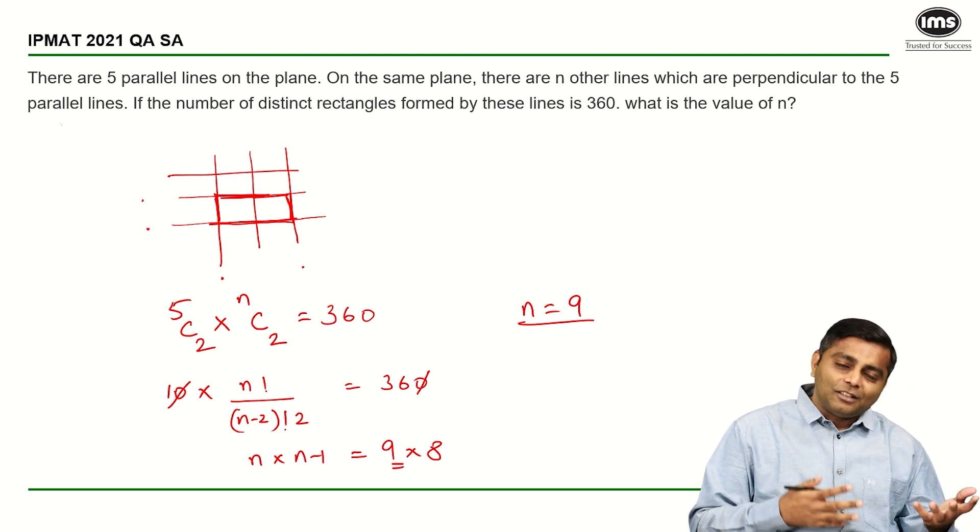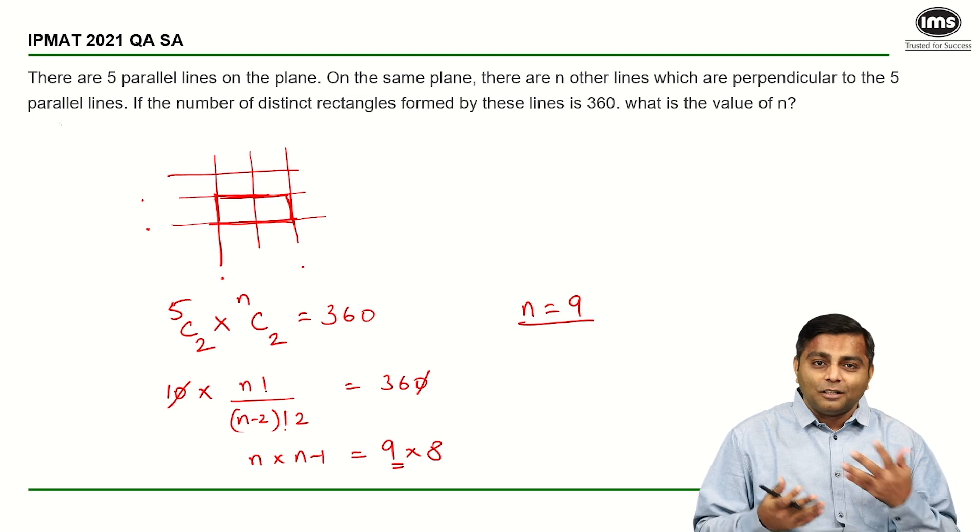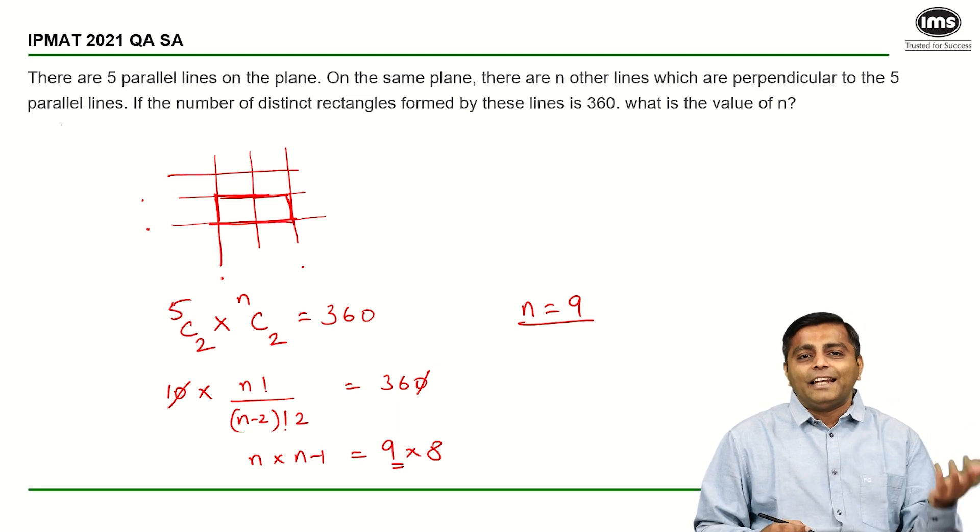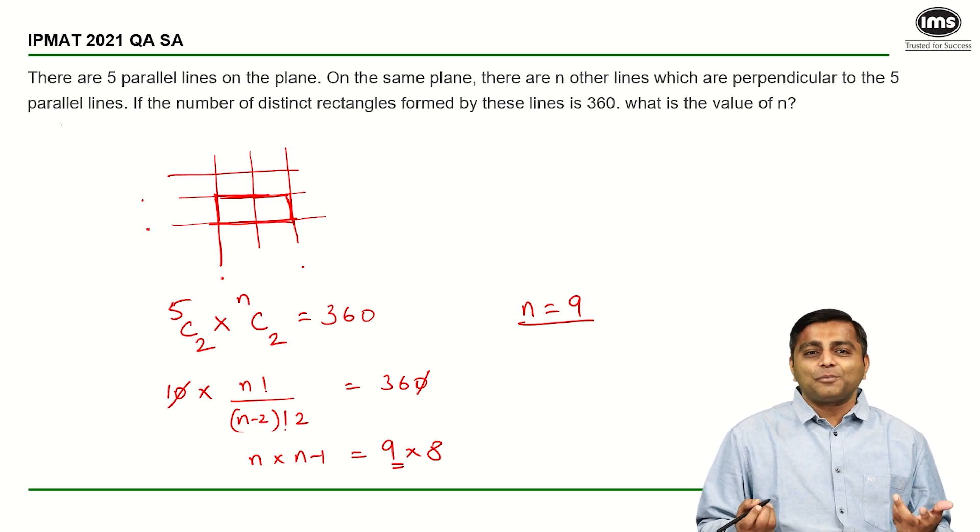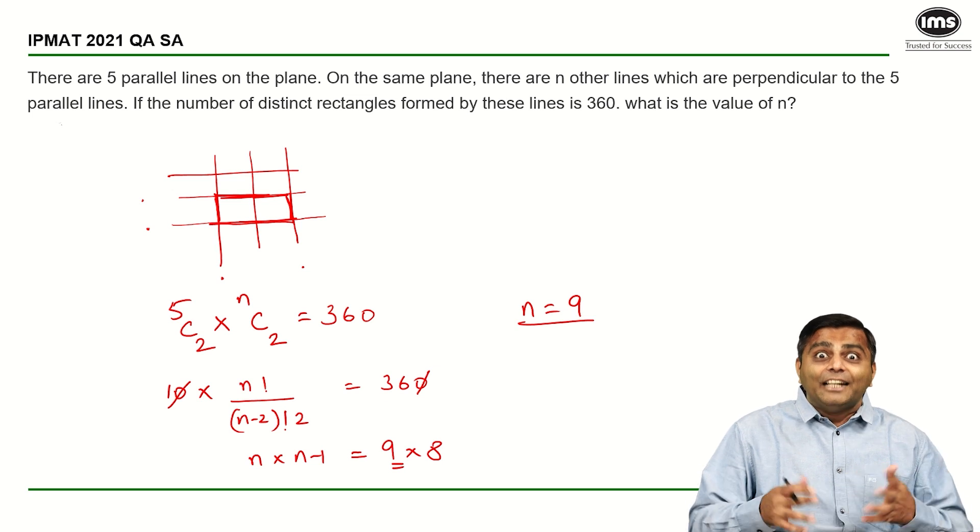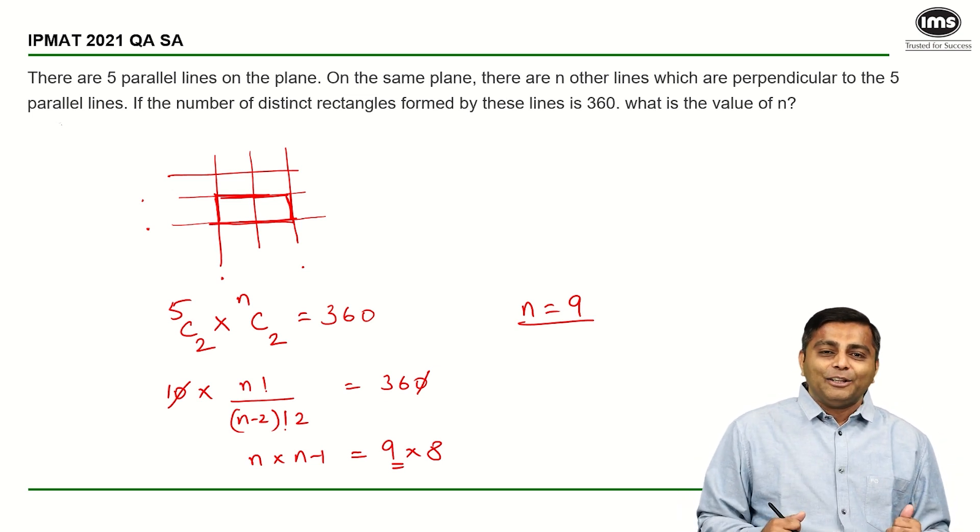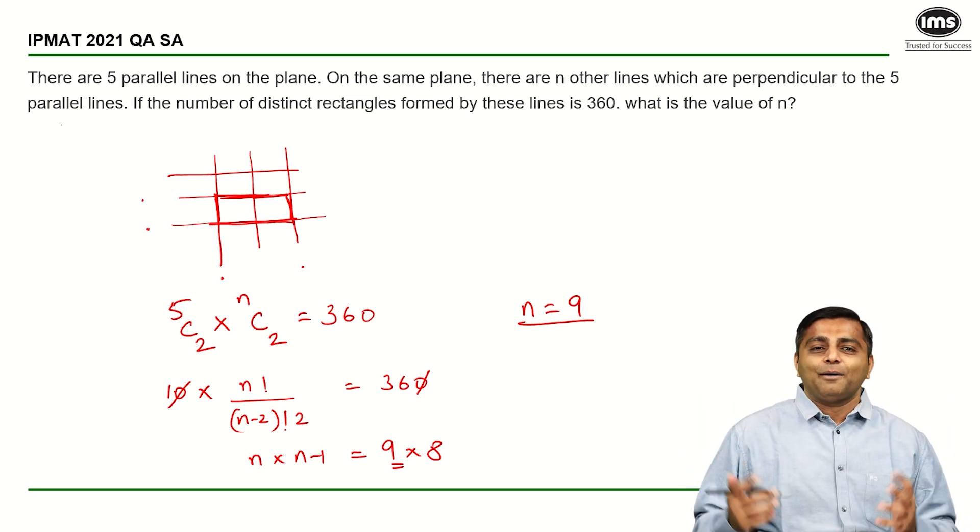Whenever there are horizontal and vertical lines and you are asked for rectangles, you know it is as good as NC2 into MC2, whatever the number of lines or the values of N and M. I hope this question was simple. And it should give you confidence that such kind of questions also come in IPMAT Indore and you do not have to be absolutely scared about the paper.